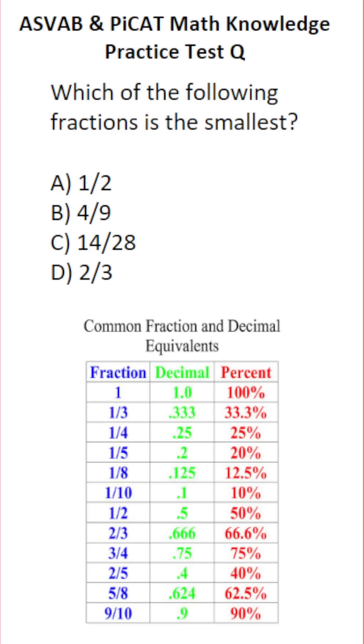Now for the ASVAB and PiCAT, it's very important to know some common fraction and decimal equivalents because in a problem like this, you would automatically know that one half is the same thing as 0.5.